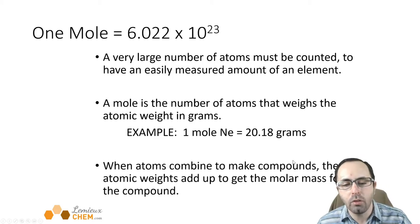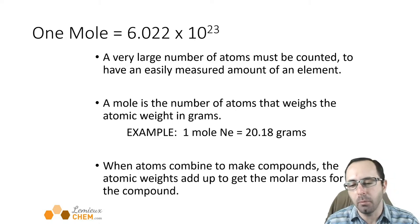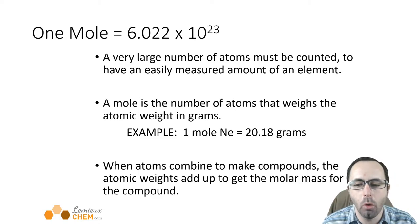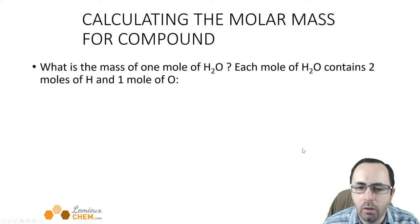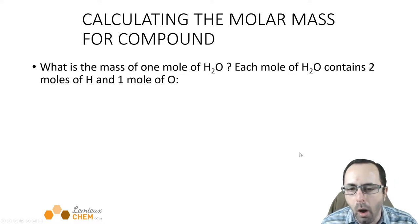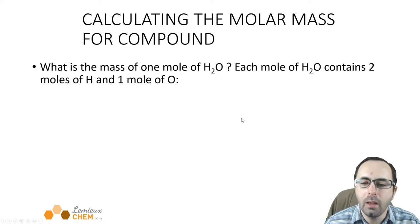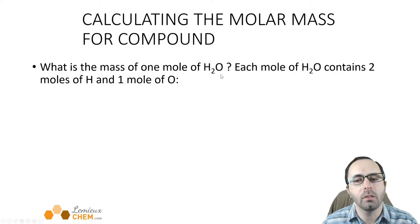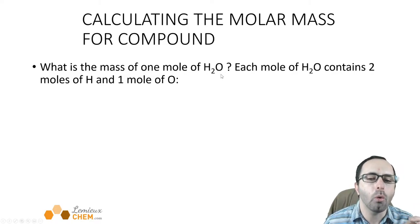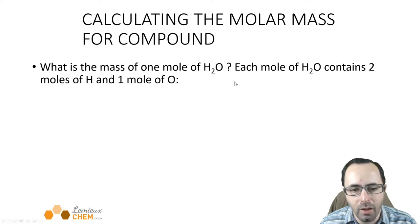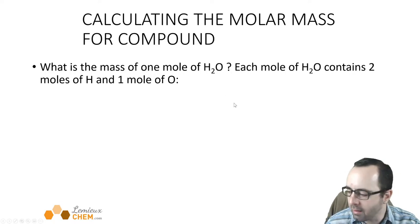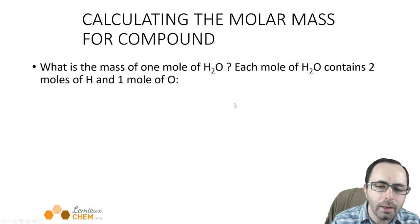When atoms combine to make compounds, you have to add up the masses of all the atoms within that compound to get the mass of one mole of the compound. For a compound like water, H₂O, one water molecule has two hydrogen atoms and one oxygen atom. A mole of water molecules will have two moles of hydrogen atoms and one mole of oxygen atoms — a very useful relationship.